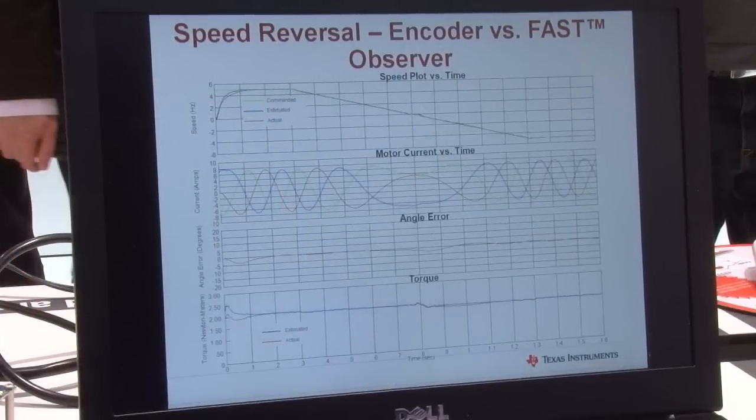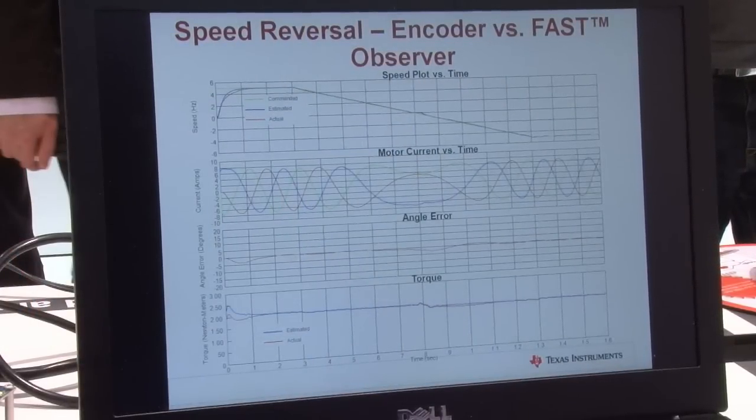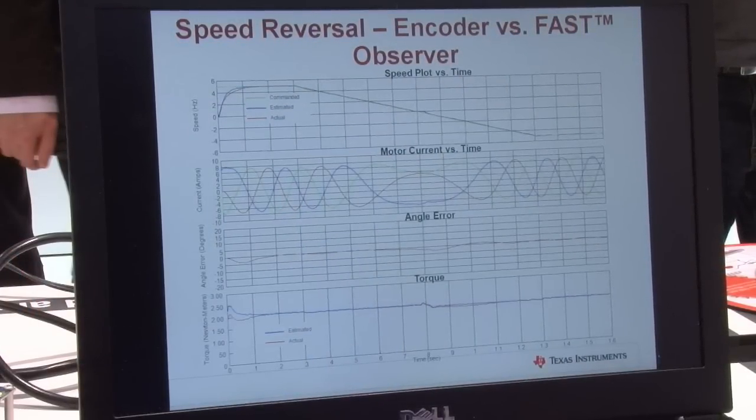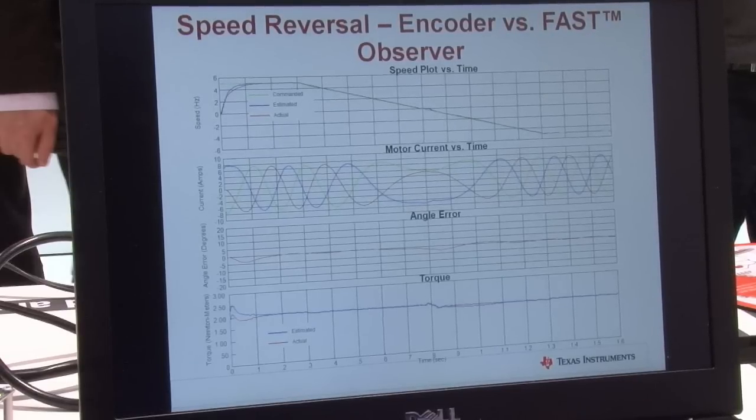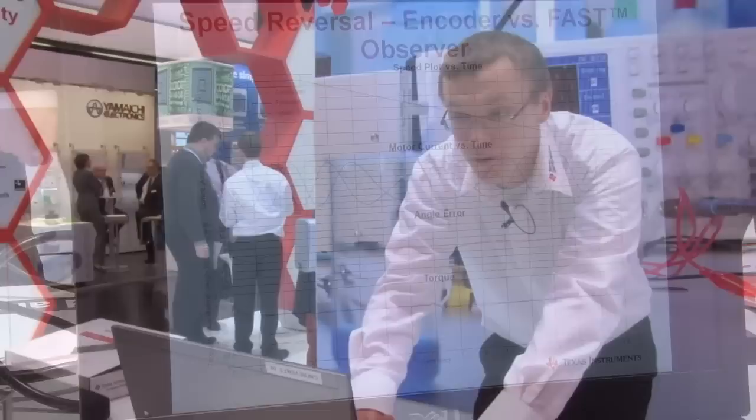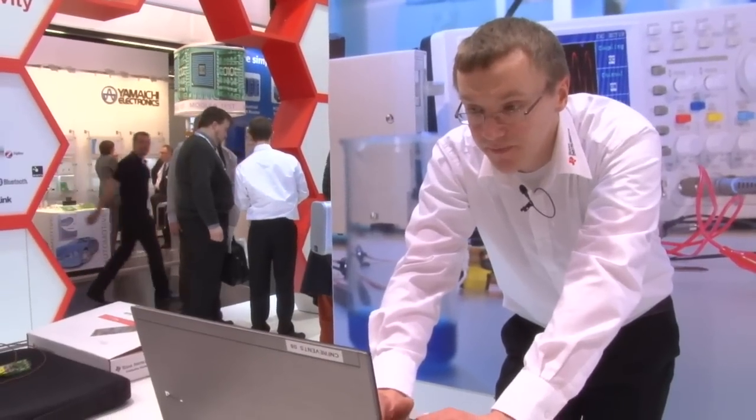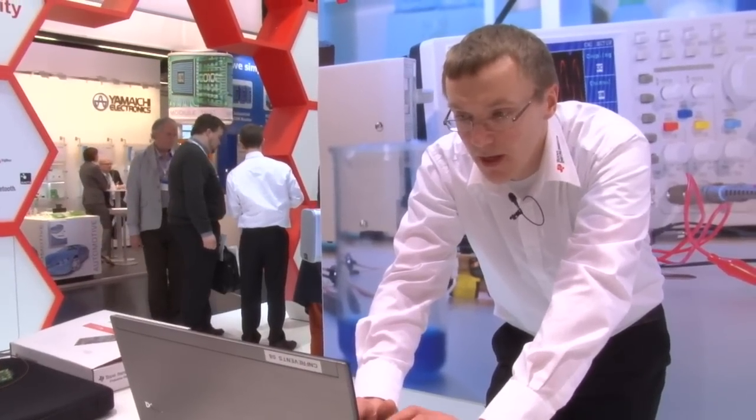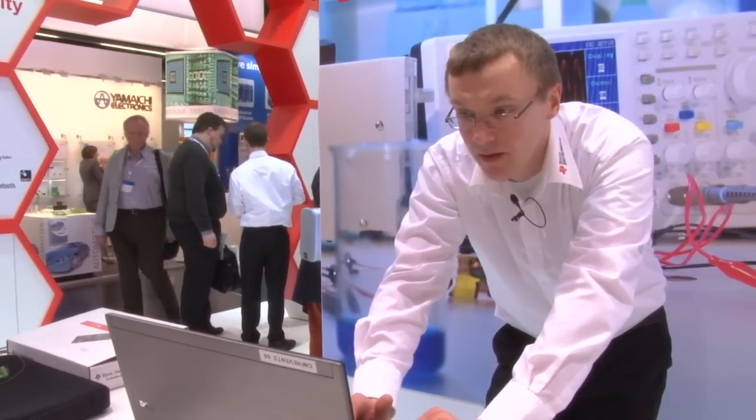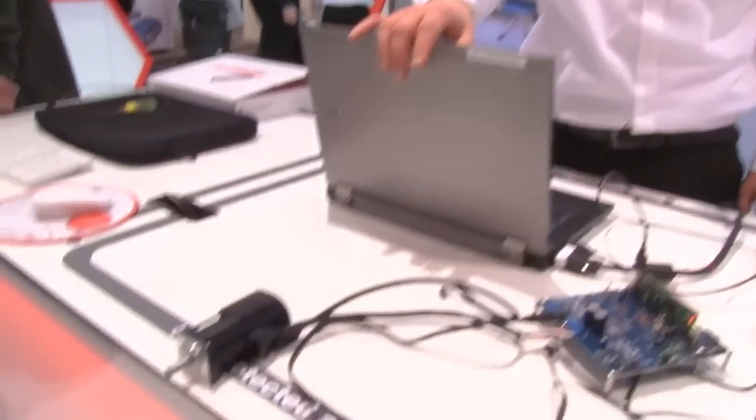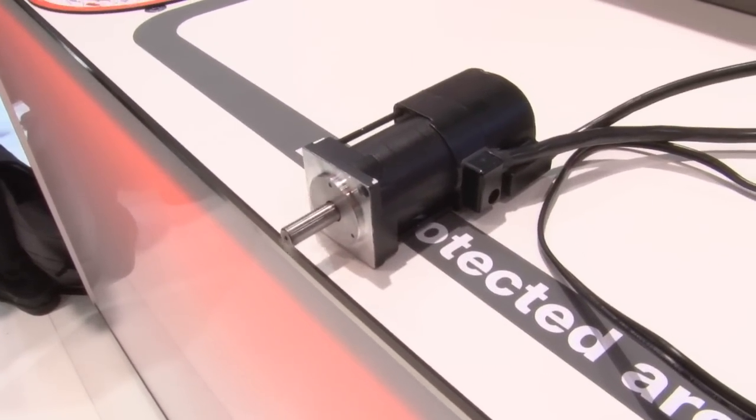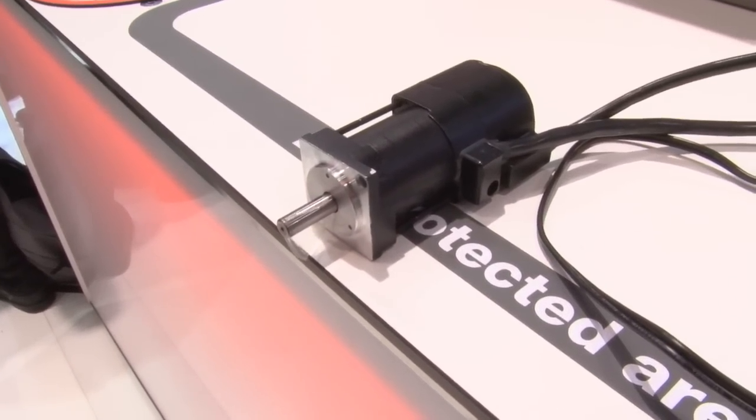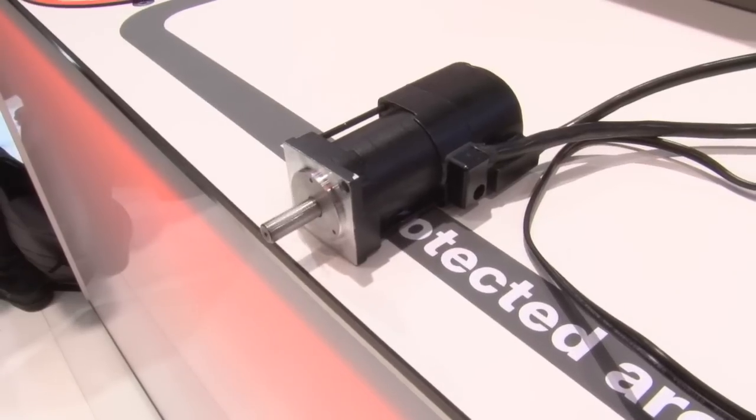With speed reversal you see that the motor control easily goes through zero speed with a sensorless approach which is very difficult if you have a SMO solution. Now I start the speed reversal. You see again the motor is calibrating itself and then it starts running one direction. It stops. You see that it stops precisely and it goes the other direction.